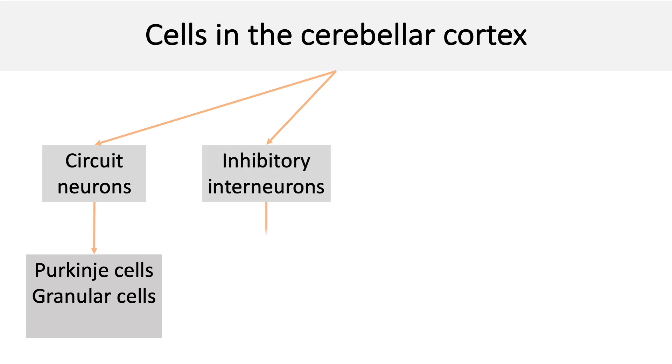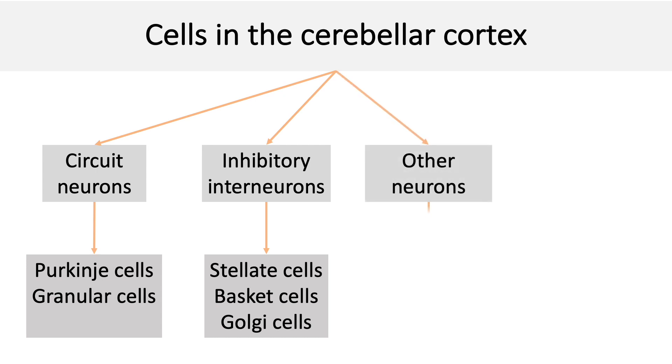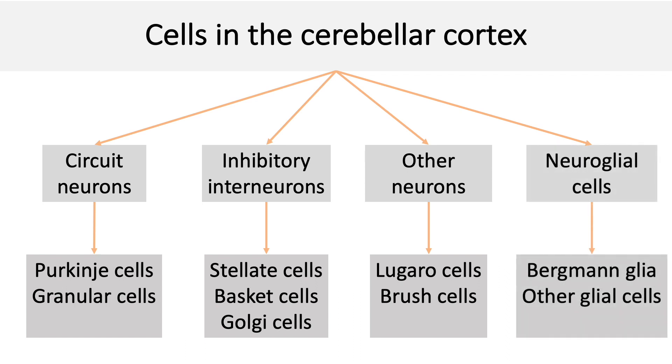Inhibitory interneurons, which include stellate cells, basket cells and Golgi cells. Comparatively rare, other types of neurons like Lugaro cells and brush cells. And lastly, the neuroglial cells, of which the characteristic neuroglial cell here is the Bergman's glia, which are the modified astrocytes. And then we also find the regular glial cells, which are found elsewhere in the CNS.